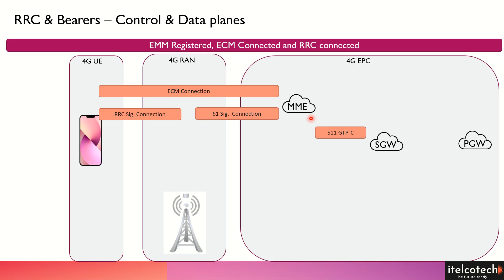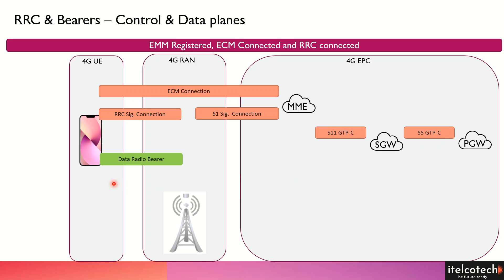Also, the MME has to talk to the SGW, and there is a GTP protocol established at the S11 interface. We also have connectivity back to the PGW, and we have the S5 interface for GTP tunneling. What we can see in red is basically the control plane.